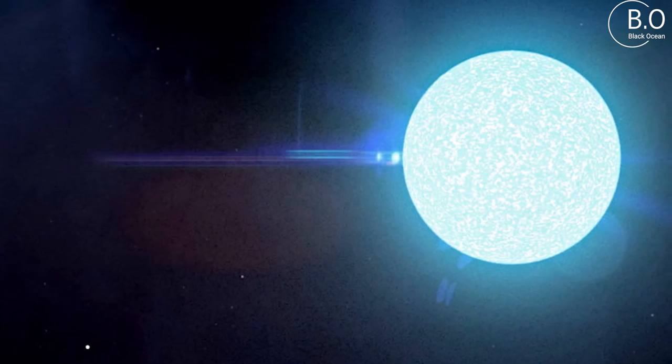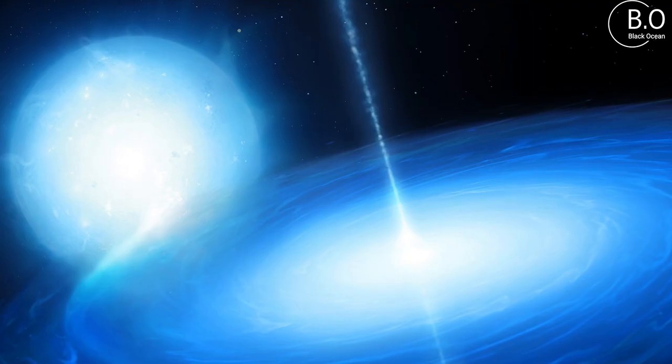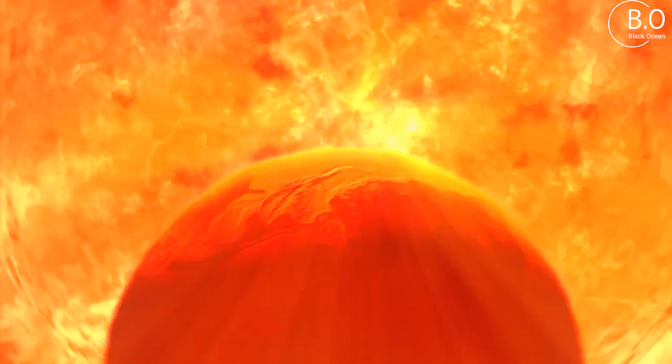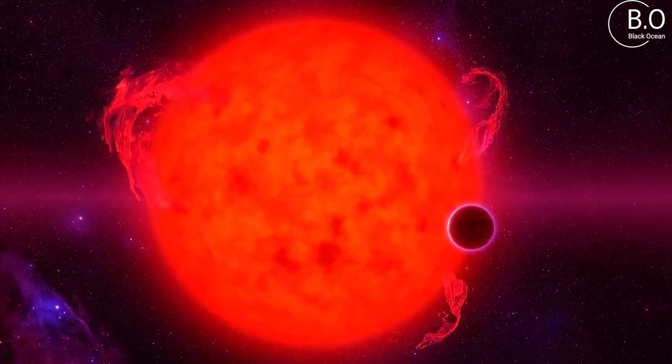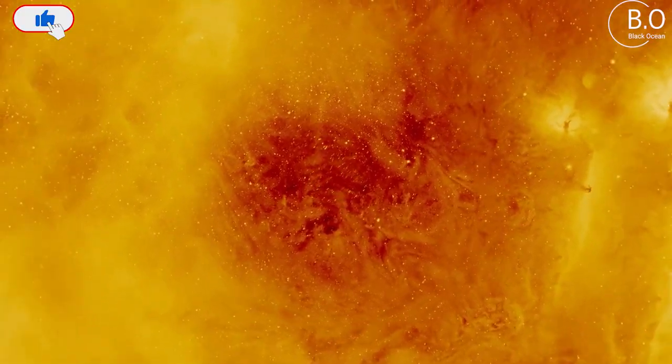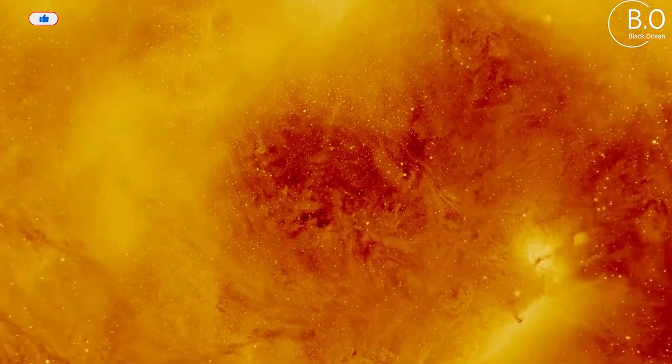The second way: if the mass of the star that has become a red giant is equal to the mass of our Sun, it loses its external gases and gradually collapses. That is, it collapses inside itself and its outer layers are lost. This process continues until the red giant becomes a white dwarf.